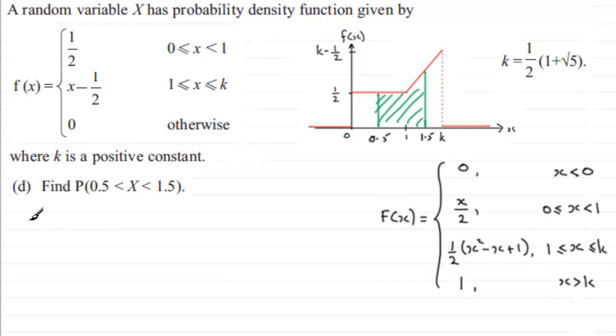So that's essentially how we go about this. I'll just put that we're finding the probability that the random variable X lies between 0.5 and 1.5. And that's going to be exactly the same as F of 1.5